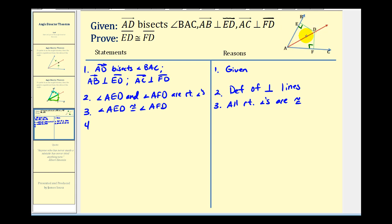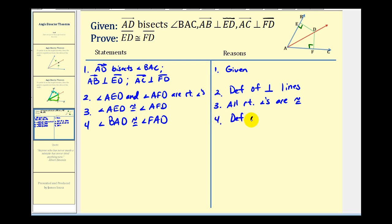Since ray AD bisects angle BAC, we know that angle BAD would be congruent to angle FAD. This is by definition of an Angle Bisector. So this angle here is congruent to this angle here.